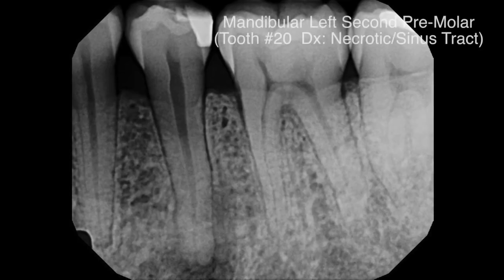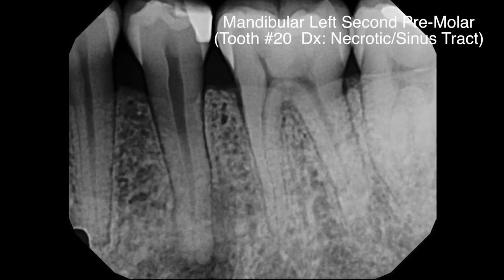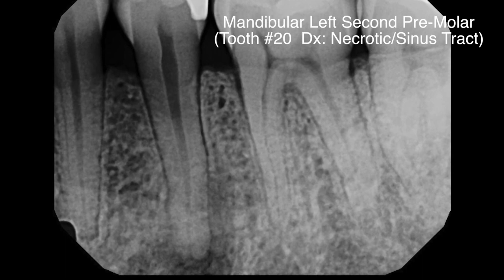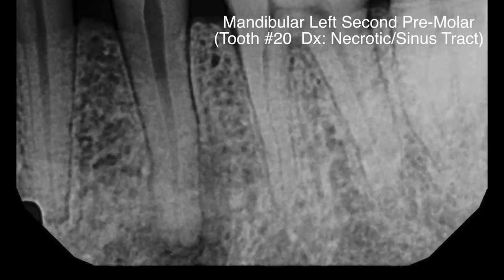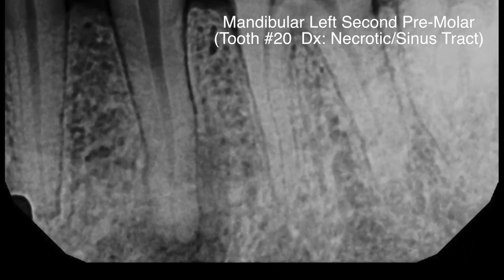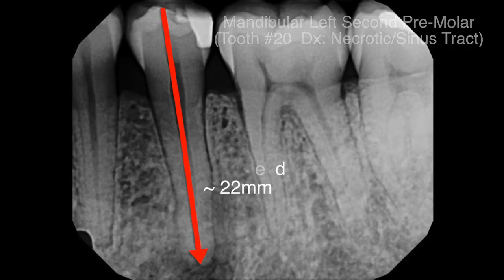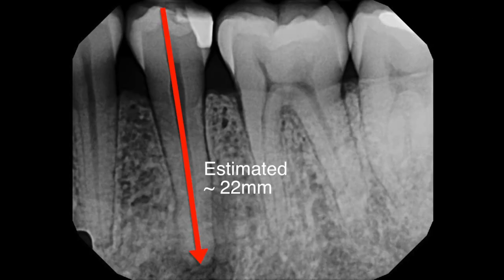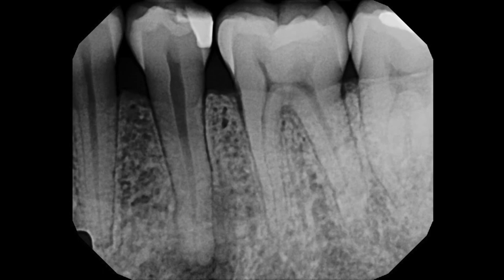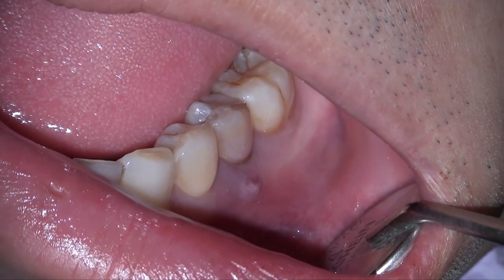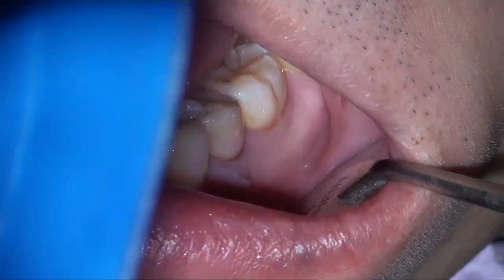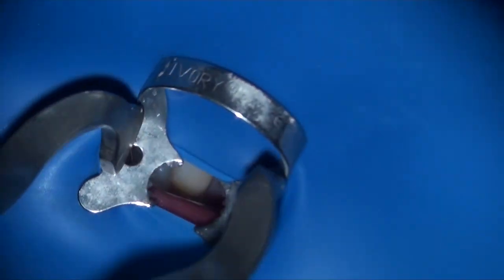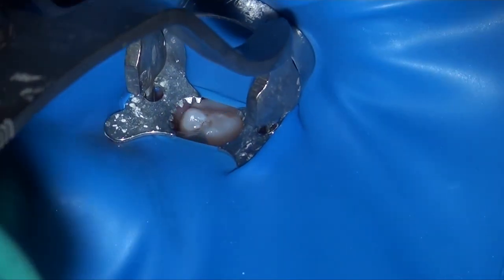Today's tooth is tooth number 20. You can see there is a necrotic tooth with a large periapical lesion. As usual we use our estimated working length from the radiograph — here we have a 22mm estimated length. This tooth also shows a sinus tract in the gingival area in the mid-root section of the tooth.